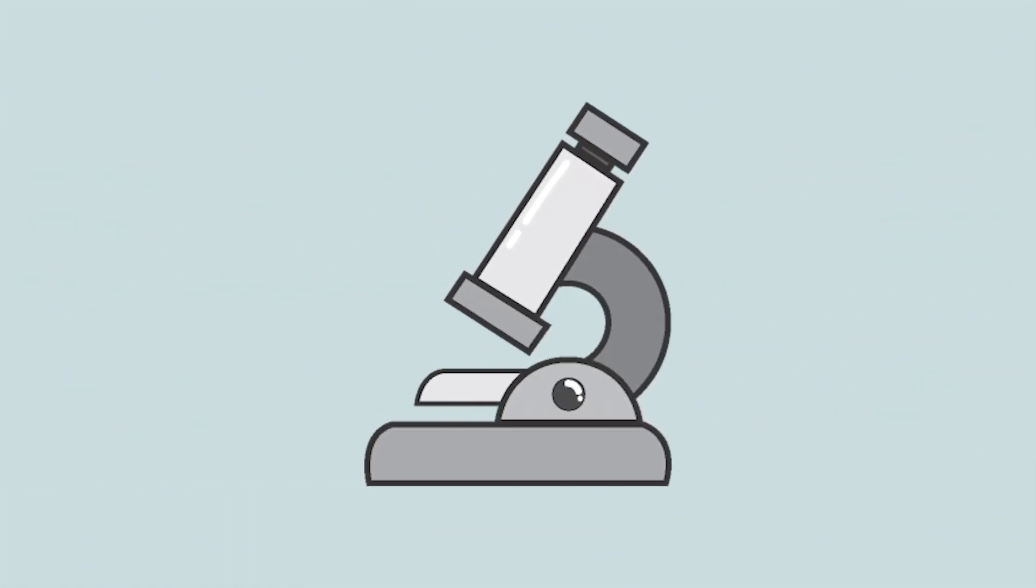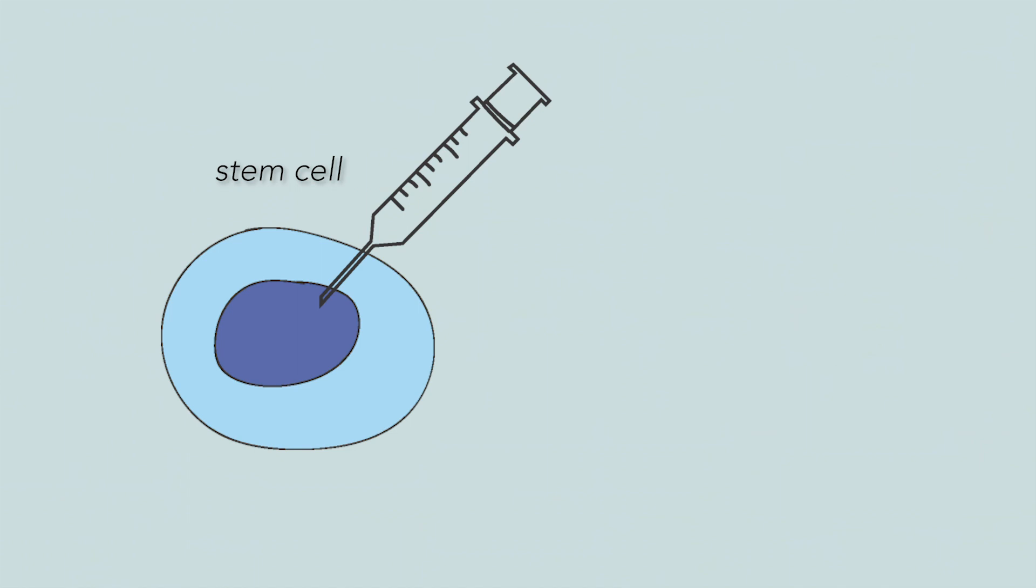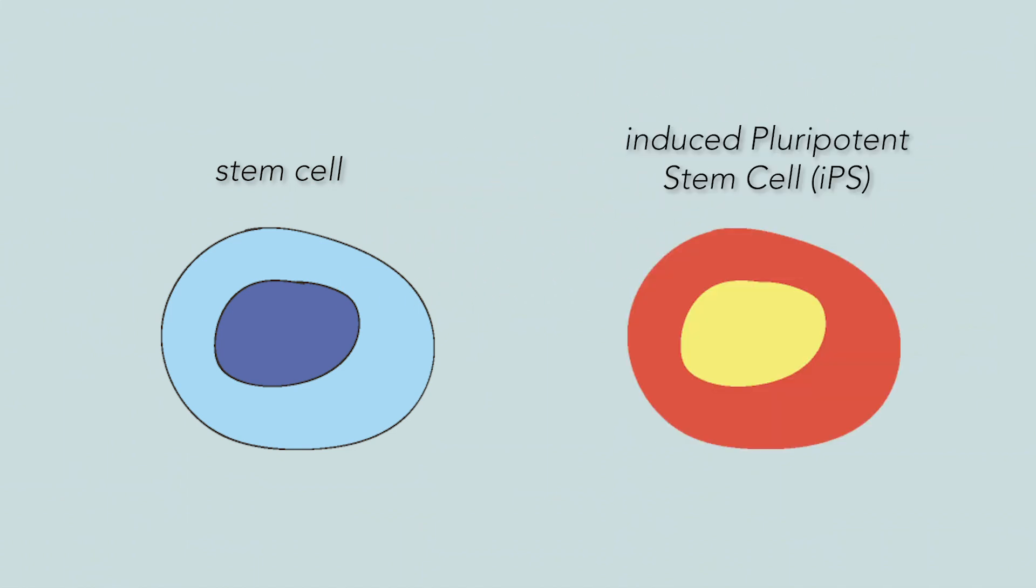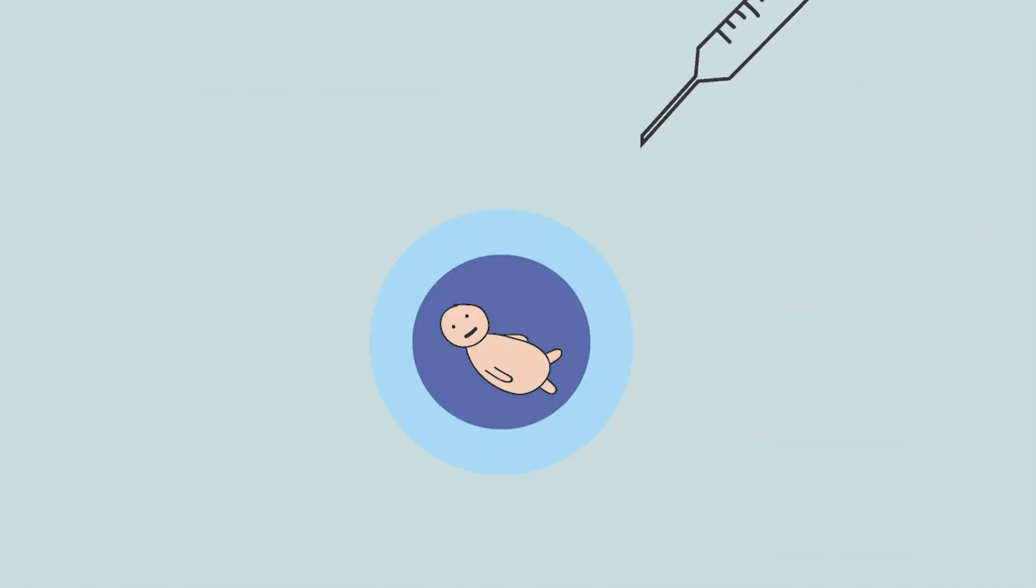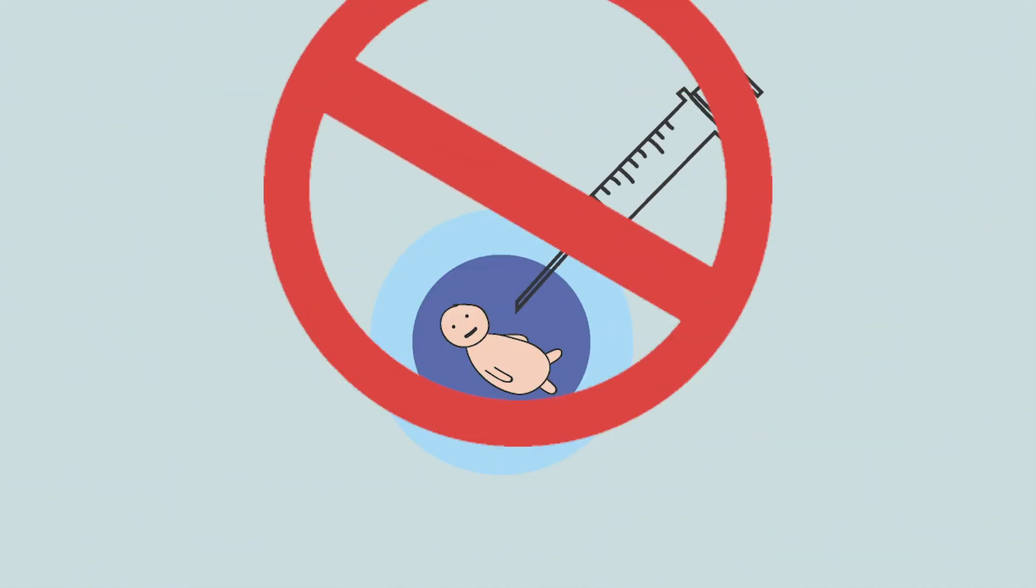However, technology has advanced tremendously. Scientists are now able to produce induced stem cells from regular cells such as muscle cells. Like stem cells, they too can become any cell in the body. This eliminates the need to extract stem cells from embryos and thus avoids controversy.